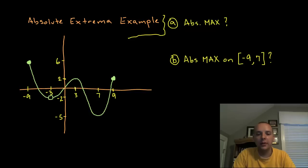So here's the graph of some function f of x, and we're just going to ask different questions about the absolute maxes and mins on different intervals. The first one says just what's the absolute maximum, period. No interval has been defined or anything like that. They just say what's the absolute maximum.